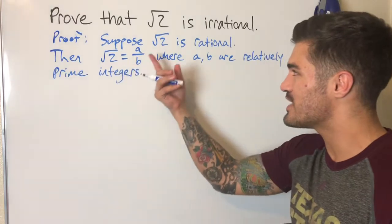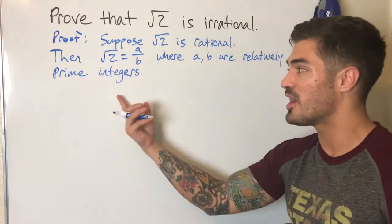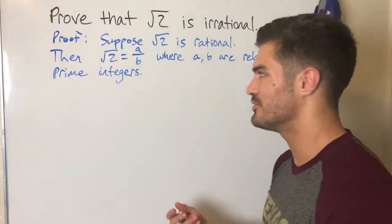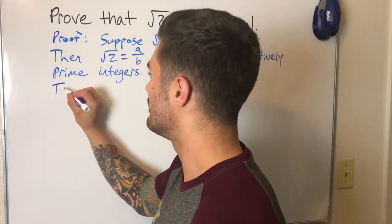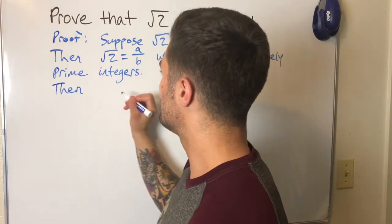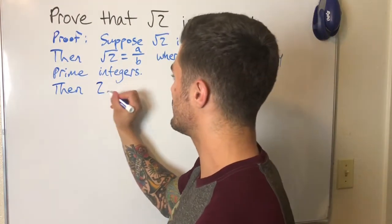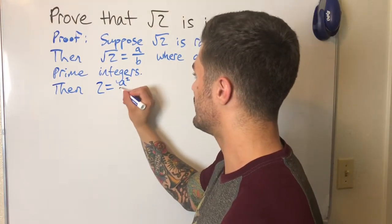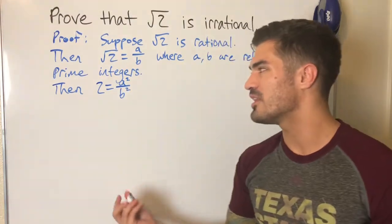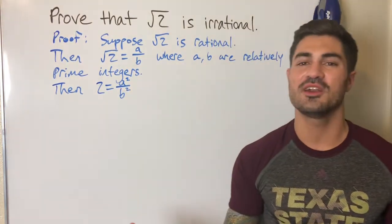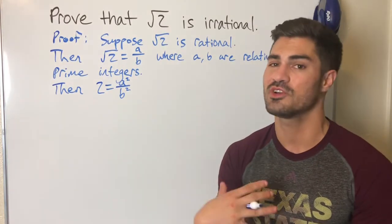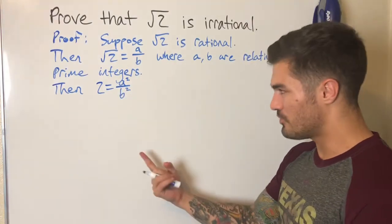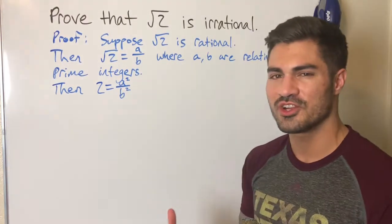So, suppose √2 is rational — that's the proof by contradiction setup. Then √2 = a/b where a and b are relatively prime integers. Now let's try squaring both sides to get rid of that square root. Then 2 = a²/b². Now what can I do? I can solve for a² — really what I'm trying to do is come across some contradiction.